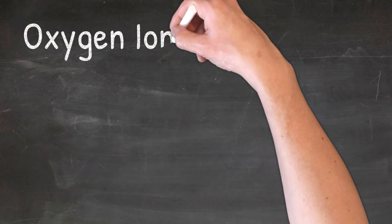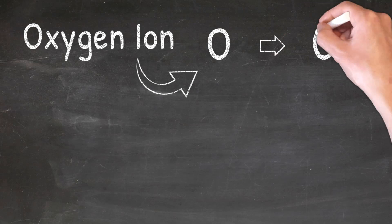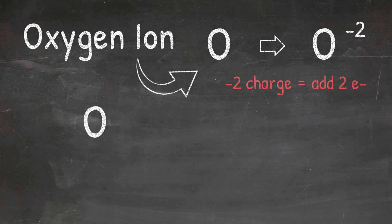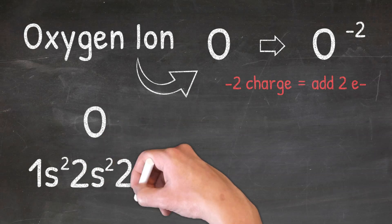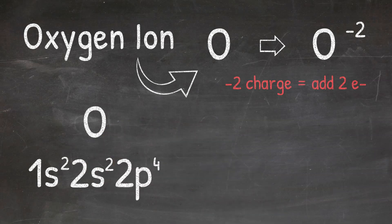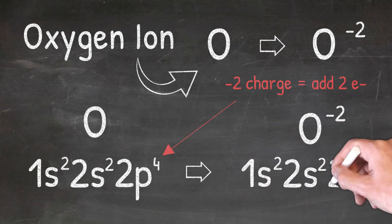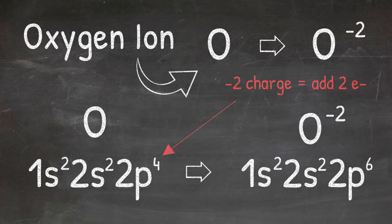Our last example is the oxygen ion. When oxygen becomes an ion it's going to have a negative two charge. The negative two charge means that two electrons have been added. I'll start with the electron configuration for the oxygen atom: 1s2, 2s2, 2p4. I'm then going to add two electrons to the outermost energy level — in this case it's the second energy level — and add them to the p orbital. A p orbital can hold at most six electrons and this one only has four, so I'll add two electrons to get six and write the electron configuration 1s2, 2s2, 2p6, which is the electron configuration for the oxygen ion.